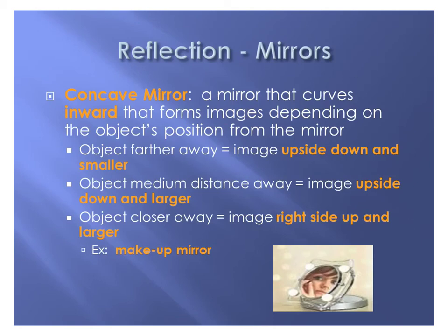The concave mirror is the one that curves inward. The image it forms depends on where the object is positioned. When the object is farther away, the image is upside down and smaller — like looking at the inside of a spoon. As the object gets closer, the image gets bigger but stays upside down. When it's really close, the image becomes right side up and larger. A makeup mirror is an example of a concave mirror.